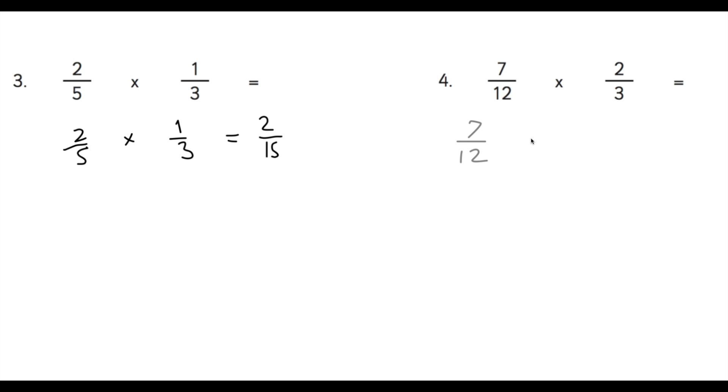For number 4, exactly the same process—we start with the numerator. 7 times 2 is 14, and 12 times 3 is 36. Now we can simplify this. If we divide the top and the bottom by 2, we would have 7, because 14 divided by 2 is 7, and 36 divided by 2 is 18. So our simplified answer is 7 eighteenths.